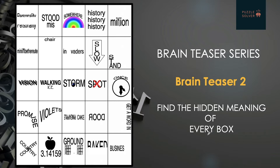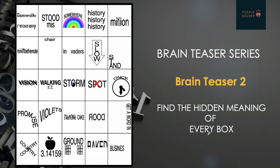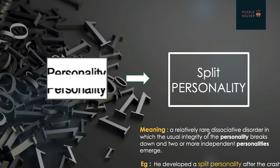Here are some words present in a sheet. You have to identify the hidden meaning of every picture present in the box. Let's start — I'll give you an example of the first box. In the first box, 'personality' is written and it is split in between, so the word would be 'split personality'. This is how you have to identify all the hidden meanings.